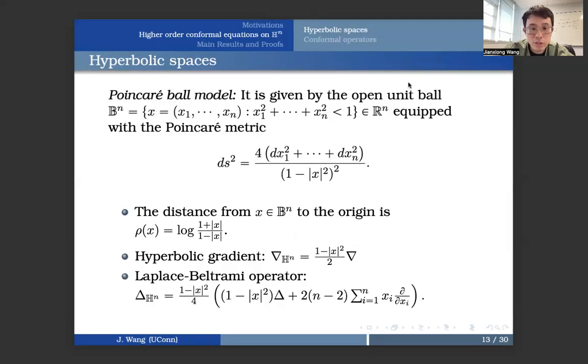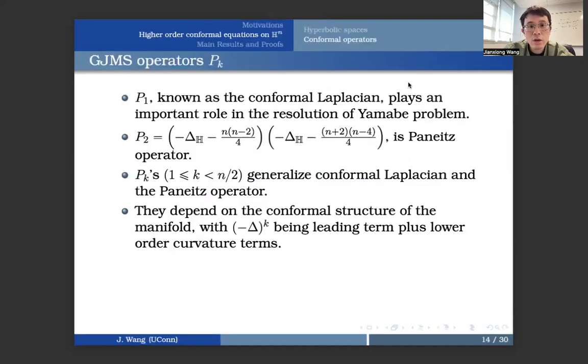divided by 1 minus x squared squared. Similarly, you can compute the distance from an arbitrary point in this ball model to the origin. It's actually equal to log 1 plus x absolute value divided by 1 minus x absolute value. And if you would like to measure the distance between two arbitrary points, you can use the Möbius transform. Also, we have the hyperbolic gradient and the Laplace-Beltrami operator in the following formulas.